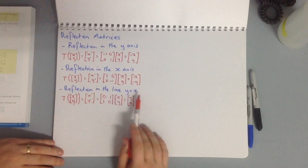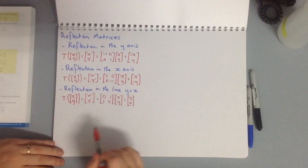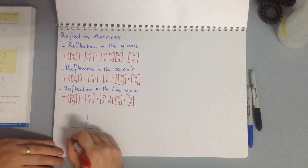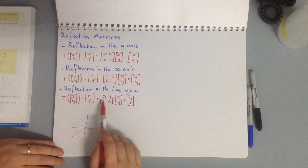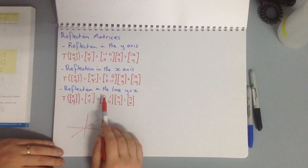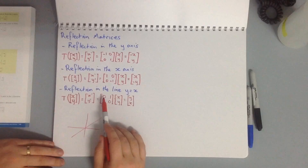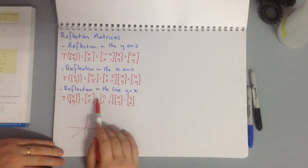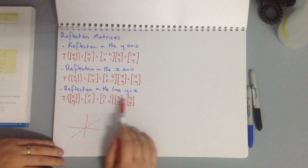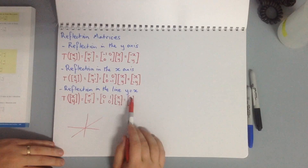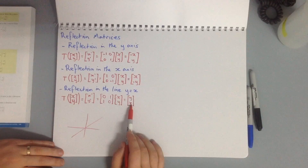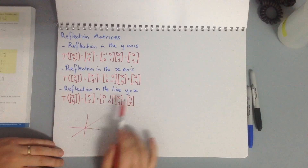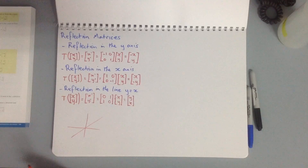For a reflection in the line y = x, we change where our zeros and ones are to get [[0, 1], [1, 0]]. Then x' = 0×x + 1×y = y, and y' = 1×x + 0×y = x. All we've done is flip the positions of our x and y values.